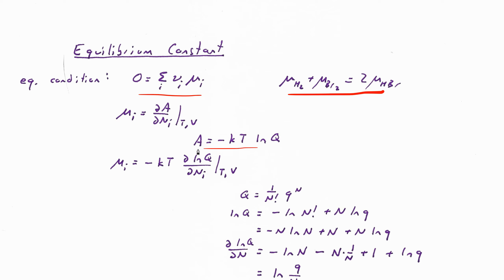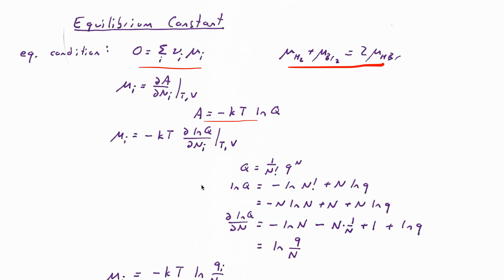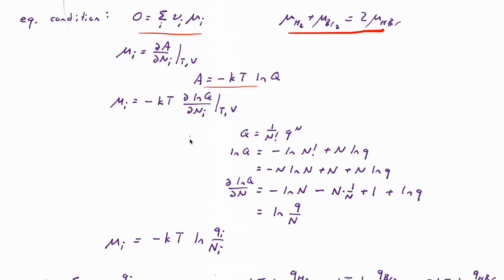The derivative of that Helmholtz free energy with respect to n — the only thing that depends on n is the partition function. So we can say the chemical potential is -kT times d(log Q)/dn at constant T and V. That works out to be -kT log of little q, the molecular partition function, divided by n. That's an equation we've seen before: d(log Q)/dn equals log(q/n).